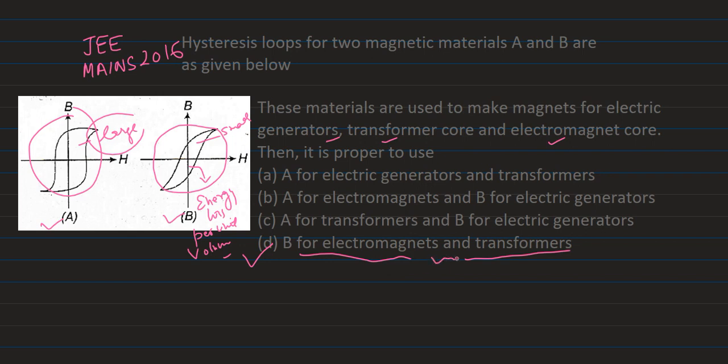So we have calculated that BH curve area is small, so transformer and electromagnet application will be suitable because there will be repeated cycles of magnetization and demagnetization. So option D is the correct answer, that is electromagnets and transformers. Thank you.